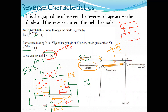This condition is known as the breakdown condition. The voltage at which this occurs is called the breakdown voltage VB. Up to VB, the current remains approximately constant, but beyond VB, a large current flows due to the breaking of covalent bonds of atoms.